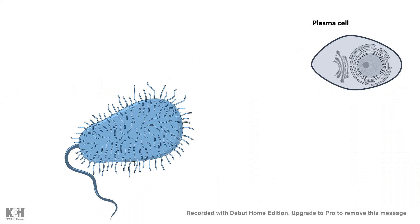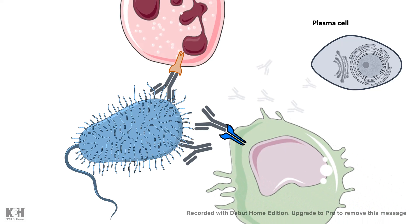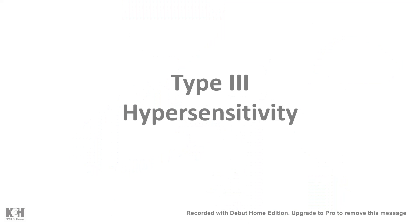In most cases, these complement proteins and bacteria are cleared by macrophages or neutrophils through the scavenging system, preventing harm to nearby cells. However, in type 3 hypersensitivity, there is too much production of these complement proteins and complexes. As a result, they are not fully cleared from the system, circulate in the bloodstream, and get deposited into blood vessel walls, creating damaging consequences.